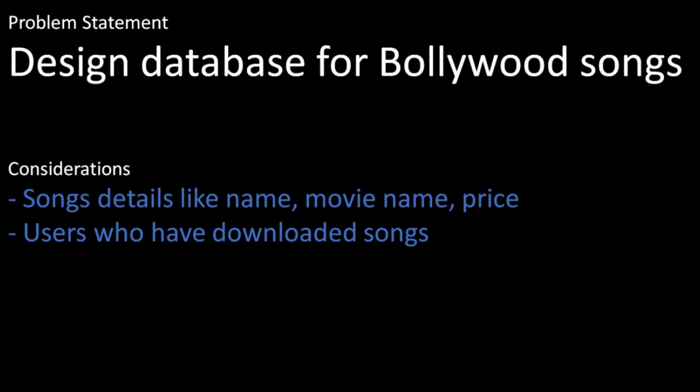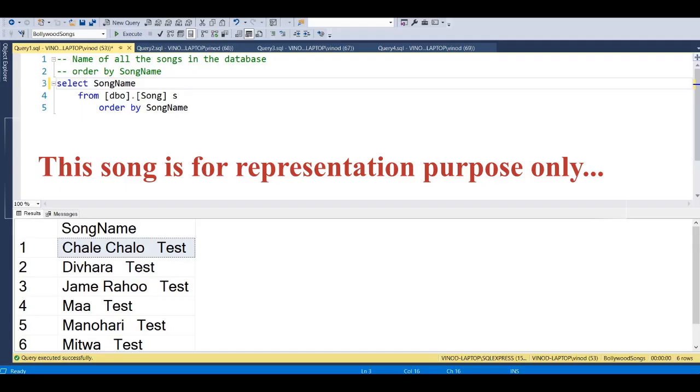There are going to be different reports generated using this data. These include a straightforward list of all songs in the database, the number of users who purchased a particular movie's song, the number of purchases for each movie, and movies for which there are multiple purchases by a single user. We'll see a live demo of how to achieve this.